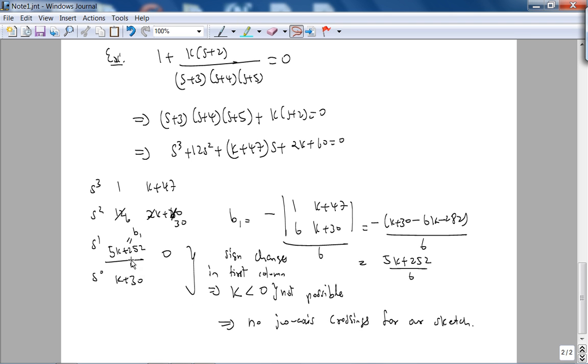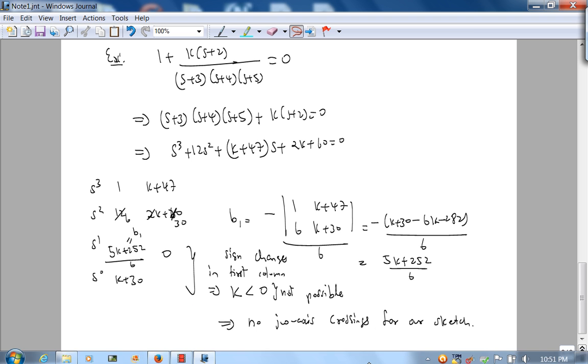Continuing, where we stopped was the fact that if you want to have j omega axis crossings, we need sign changes in the first column. For our system here, that implies K has to be negative, which is not possible. We know that because there were no j omega axis crossings for our sketch. This confirms it very nicely.